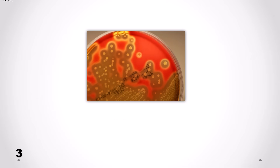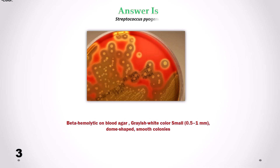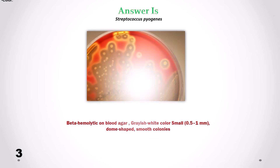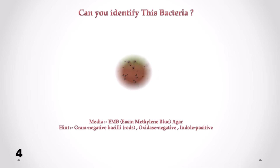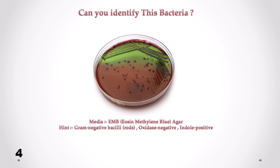Can you identify this bacteria? Correct answer is Streptococcus pyogenes. We can see beta-hemolytic, grayish to white color, small dome-shaped smooth colonies.